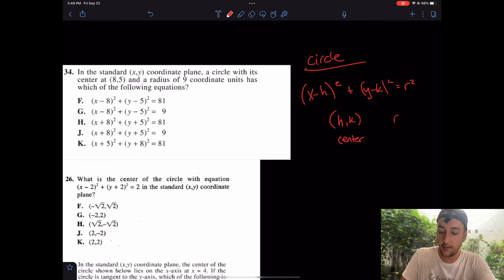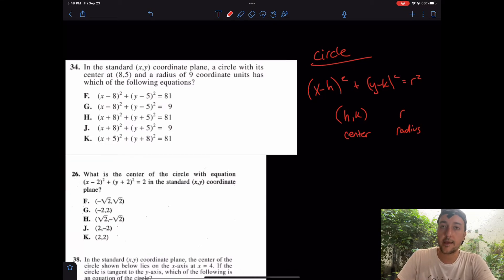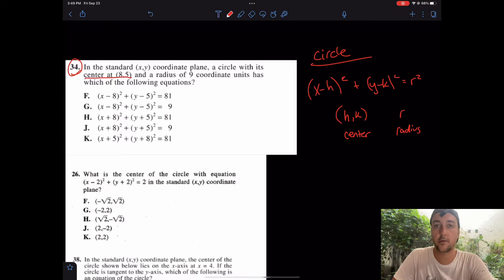h comma k is always going to be the center of the circle, while r is the radius. In that case, how could I go about doing some of these questions? Some of them are actually so easy, they only take seconds. Let's take a look. I'll try number 34 and then you can try number 26.